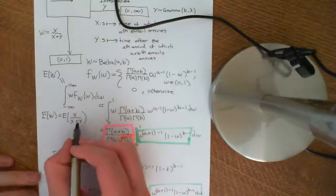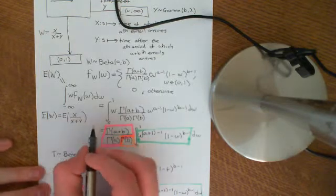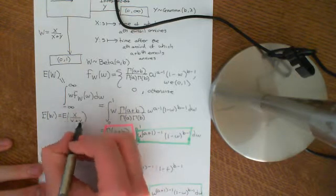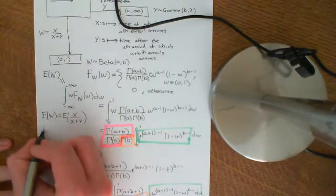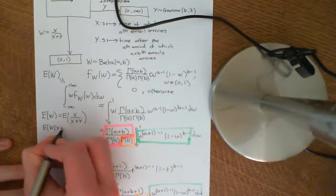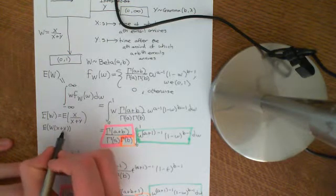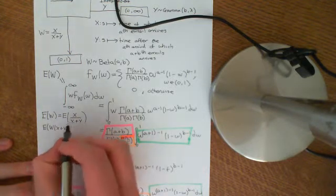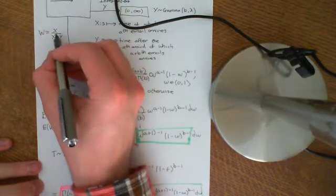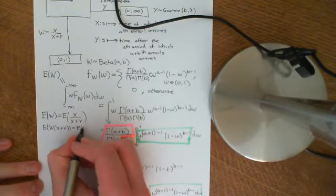What happens basically is that we can imagine what W times X plus Y gives us. If we make a new random variable which is W times X plus Y, then what we know is that the random variable W times X plus Y is just going to be the random variable X. So that is going to equal the expected value of X.